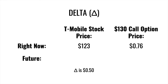For example, let's say we had a delta of 50 cents, and we were using the stock T-Mobile. Right now, T-Mobile's stock is about $123, and a call option with a strike price of $130 is currently priced at 76 cents per contract. So if T-Mobile's stock price moves to $124 — a $1 increase, keeping all other factors constant (ceteris paribus) — then the 130 strike price call option is now worth 50 cents more. So 76 cents plus 50 cents means the 130 strike price call option is now worth $1.26. Delta tells us how an option's price moves based on changes in the stock price.